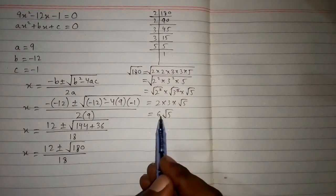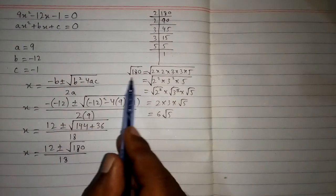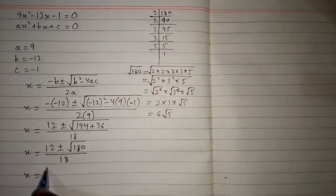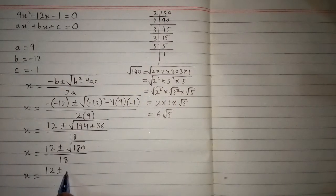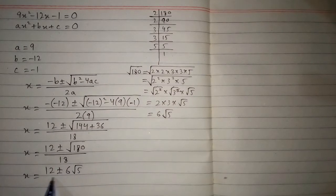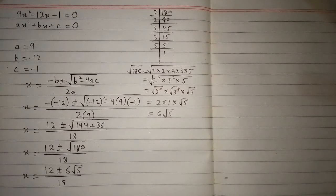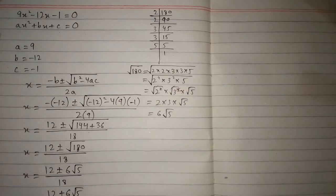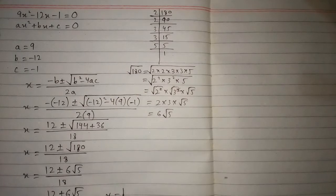Now we will put 6 under root 5 in place of square root of 180. So we have x is equal to 12 plus minus 6 under root 5 upon 18. Now we have 2 values of x: one is with the plus sign and the other is with the negative sign.